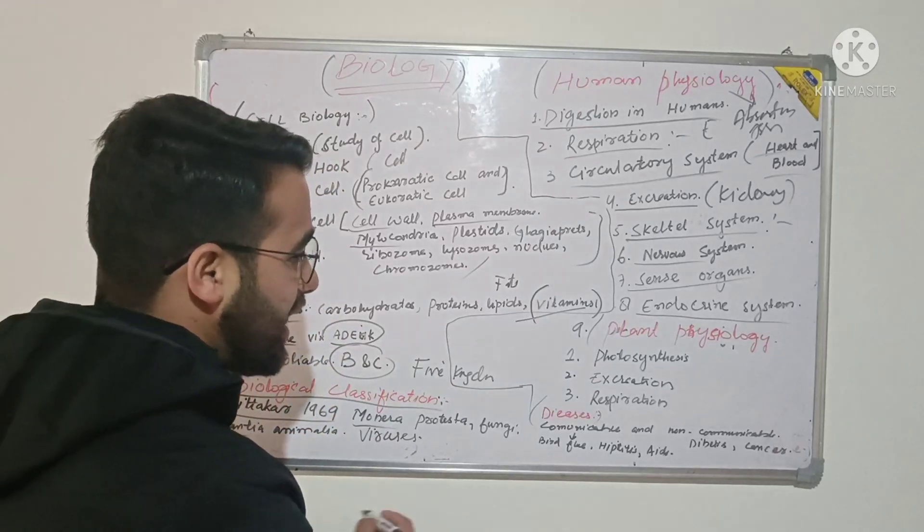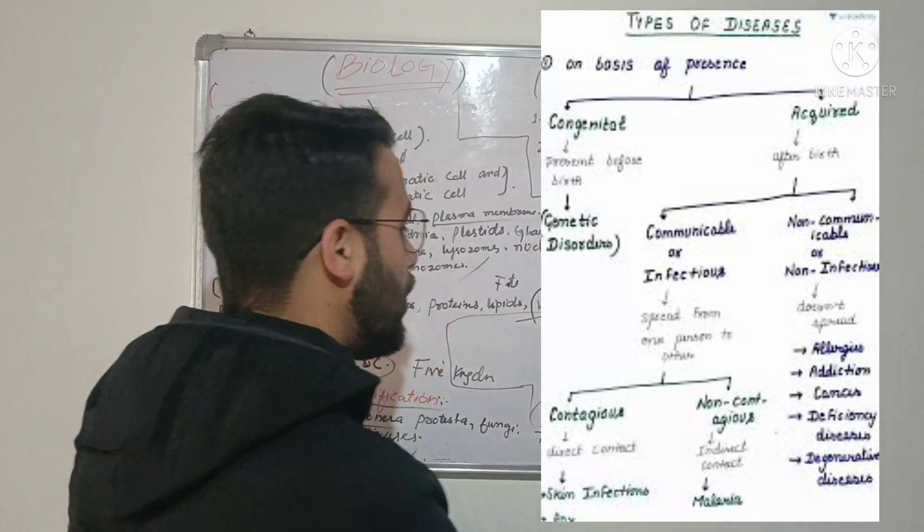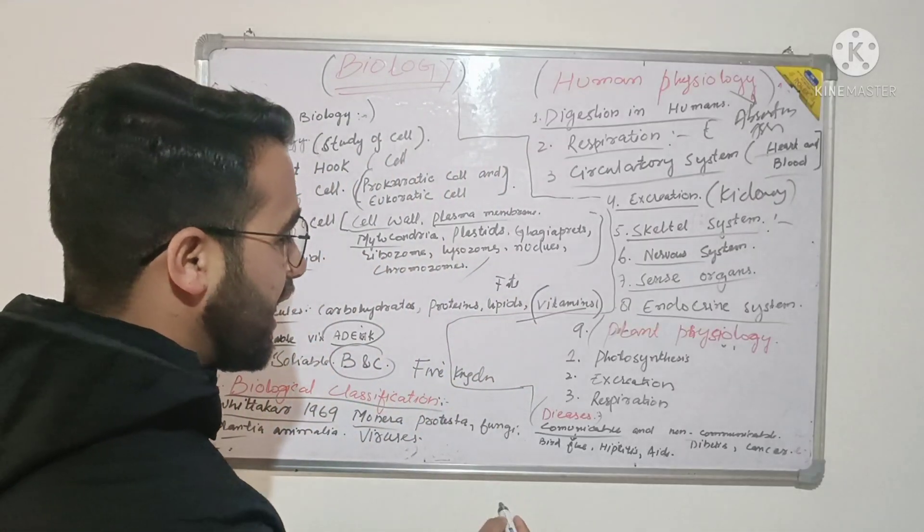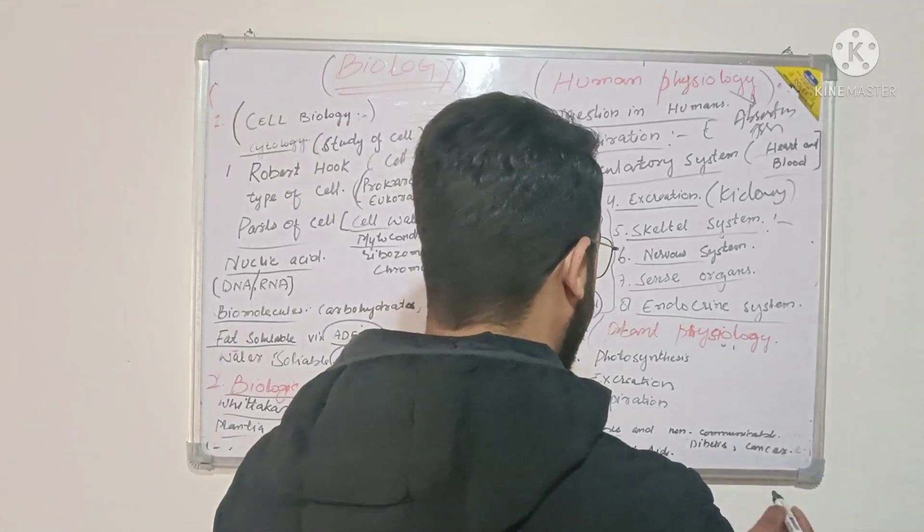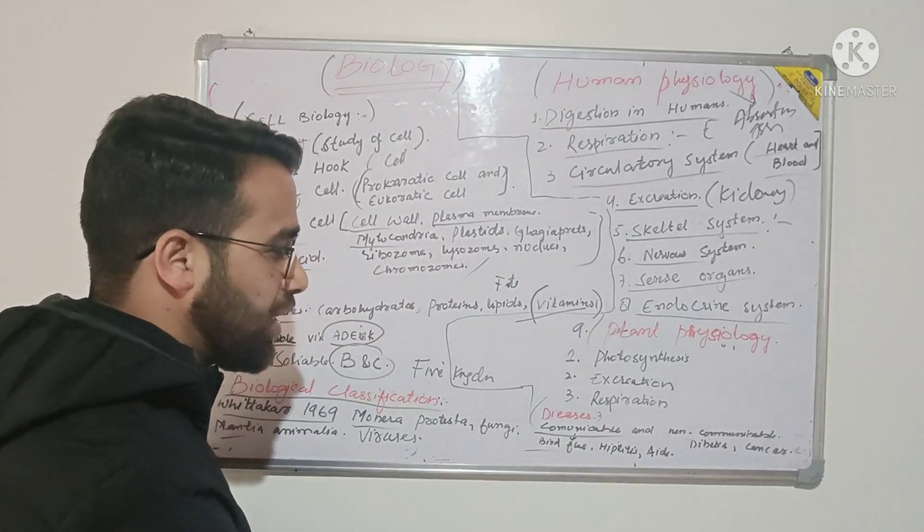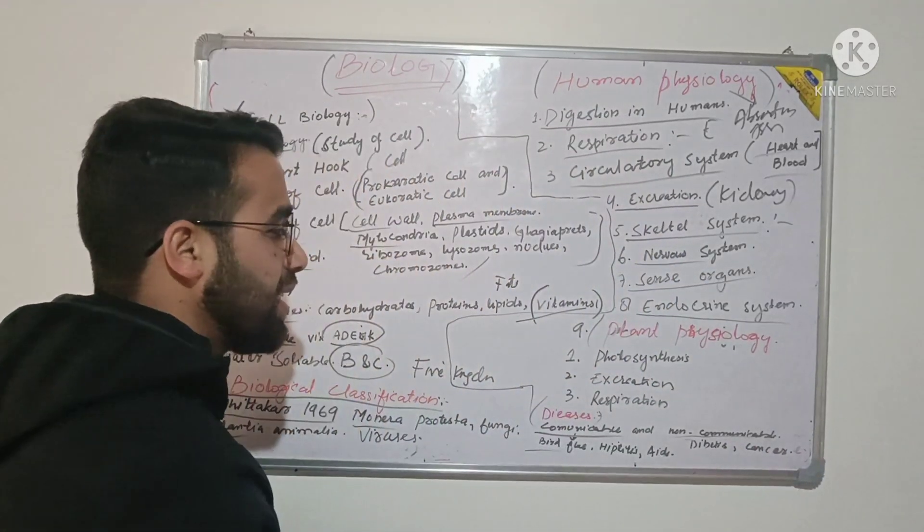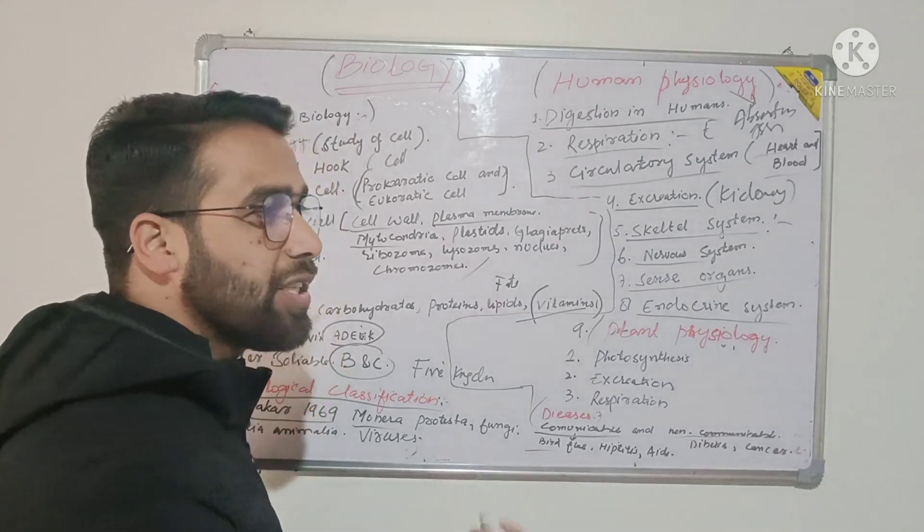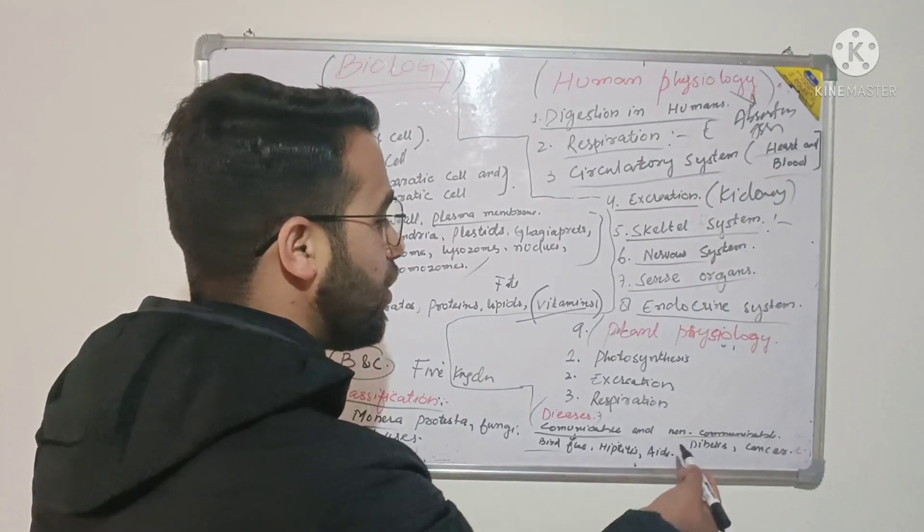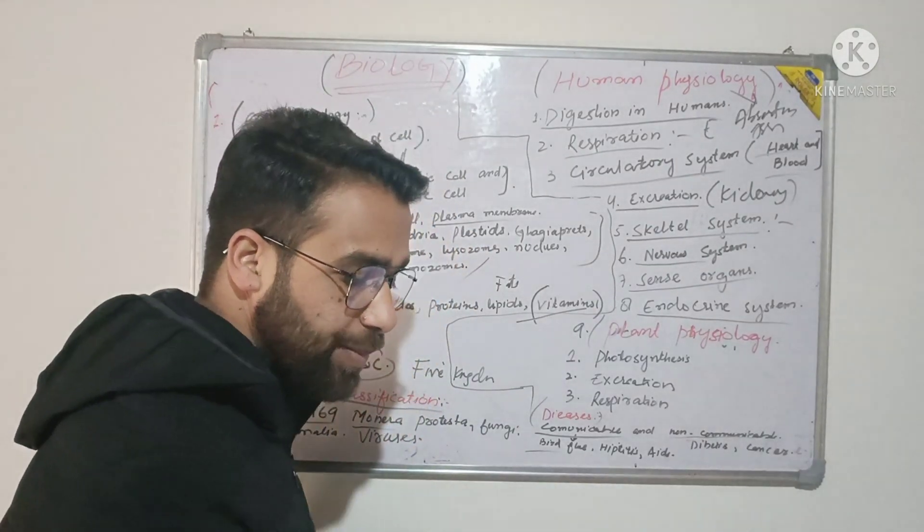Then you will study another chapter in biology about diseases - communicable and non-communicable diseases. You will find the difference between them. Like bird flu and hepatitis come under communicable diseases. Then non-communicable diseases like diabetes and cancer. Communicable diseases spread from one person to another. Non-communicable diseases do not spread from one person to another.